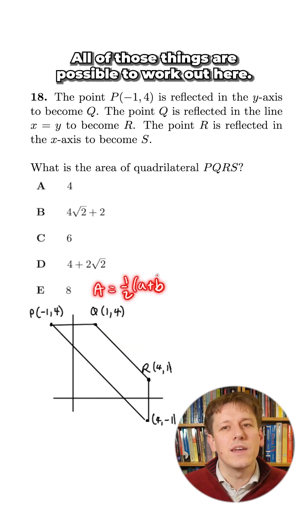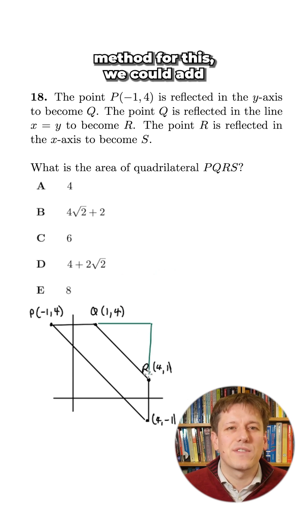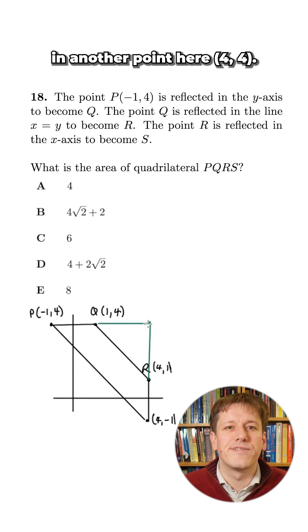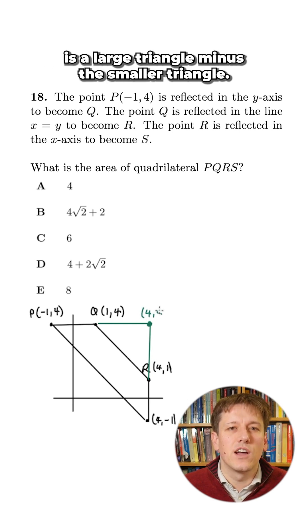All of those things are possible to work out here but if you want a nice fast math challenge method for this we could add in another point here 4, 4 and see that the trapezium that we've got here is a large triangle minus a smaller triangle.